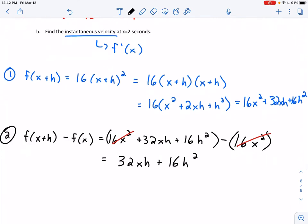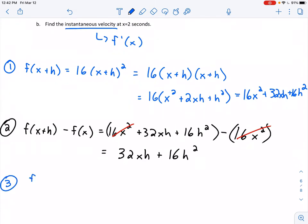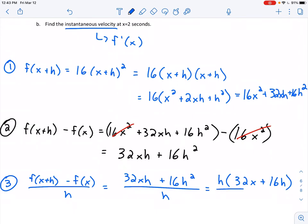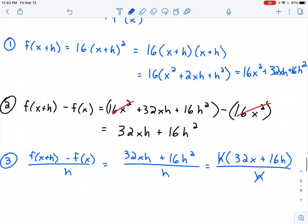Step three: take what I found last time, f(x+h) - f(x), and divide by h. So (32xh + 16h²) divided by h. In the numerator, I can factor out an h, leaving 32x + 16h, all divided by h. The h in the numerator and denominator cancel, leaving 32x + 16h.